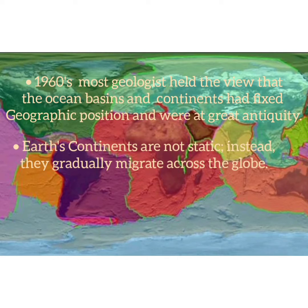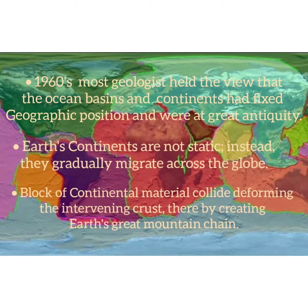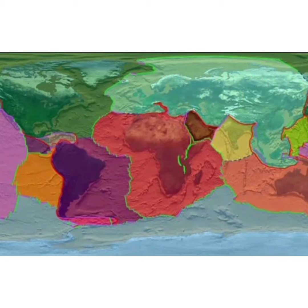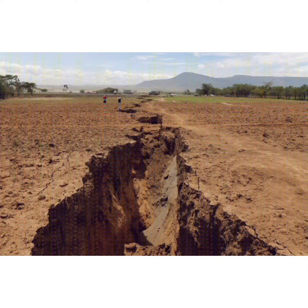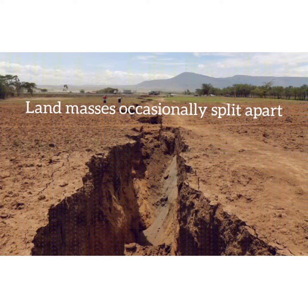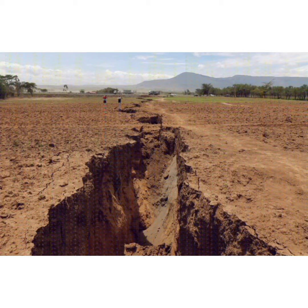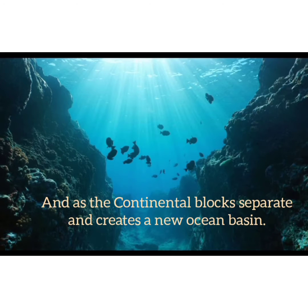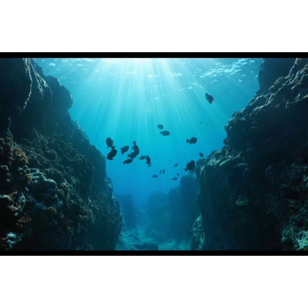Because of these movements, blocks of continental material collide, deforming the intervening crust, thereby creating Earth's great mountain chains. Furthermore, land masses occasionally split apart as continental blocks separate and create a new ocean basin.